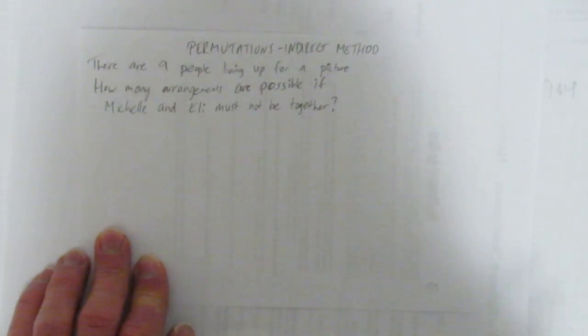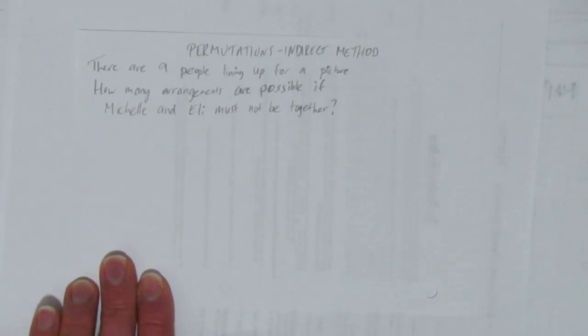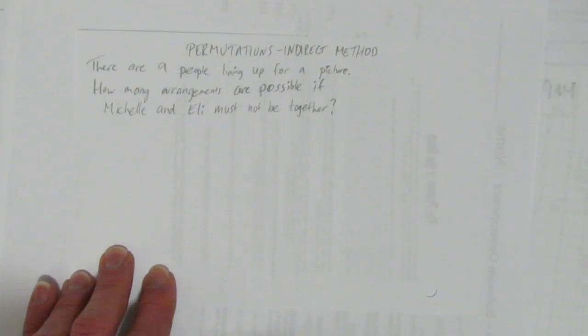In this video, we'll look at permutations and how to do the indirect method. So suppose nine people are lining up for a picture. How many arrangements are possible if Michelle and Eli must not be together?